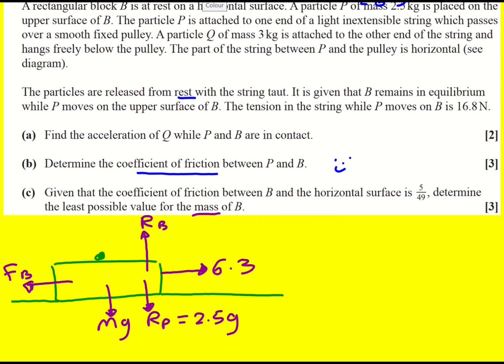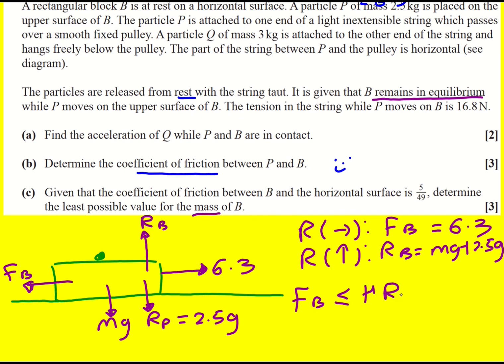We need to somehow find the mass M. And we can do that by linking again the friction with the normal reaction. So if I resolve in the horizontal direction then because B is in equilibrium we were told that, it must be that the friction acting on B is equal to 6.3. And then if we resolve vertically it must be that RB is equal to MG plus 2.5G. Now we don't know that friction is maxed out so it's going to be FB is less than or equal to μRB. So friction only takes the value that it needs to to stop it moving. So I want to work in terms of that.